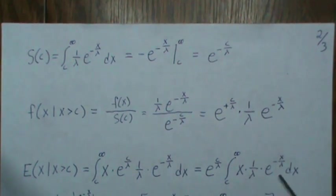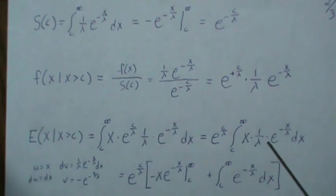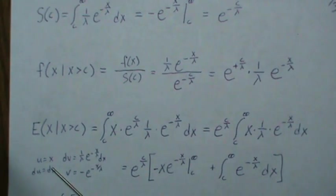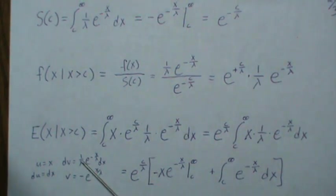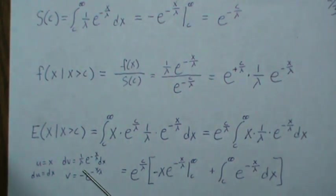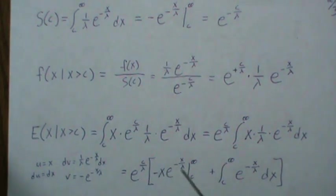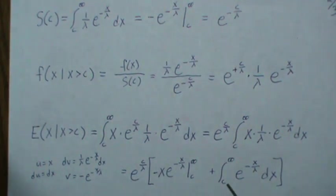We're going to use integration by parts to solve this with u equal X and dv equal 1 over lambda e to the minus x/lambda dx and it can be shown to be this, this is the uv limits of integration, this is the vdu.